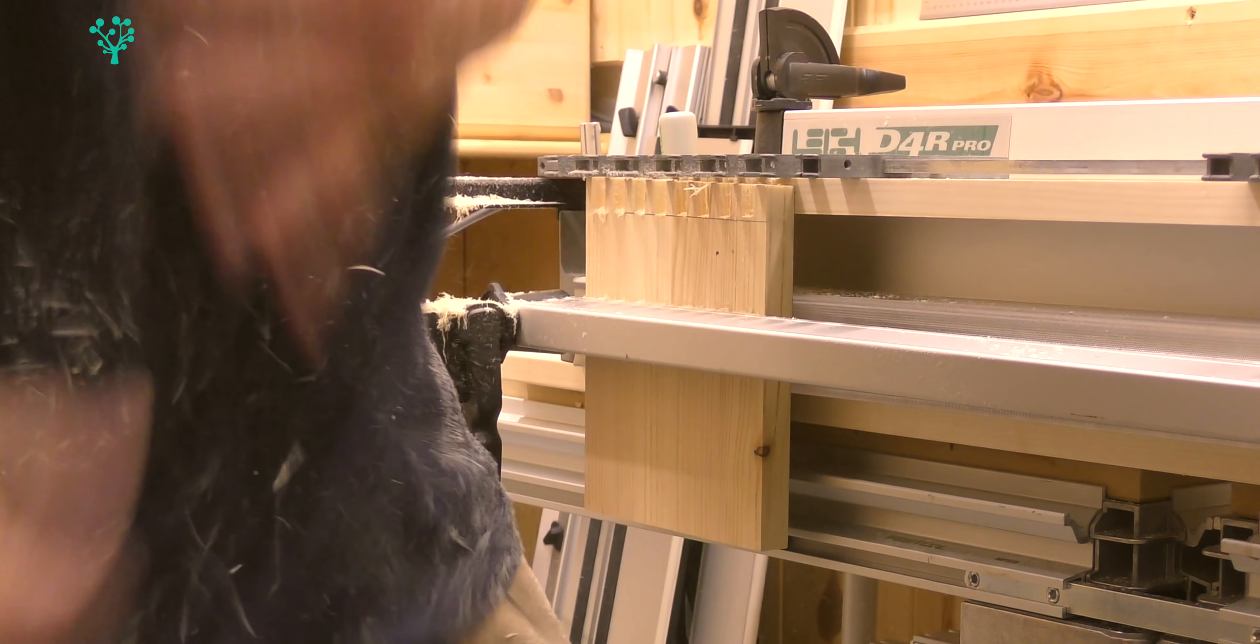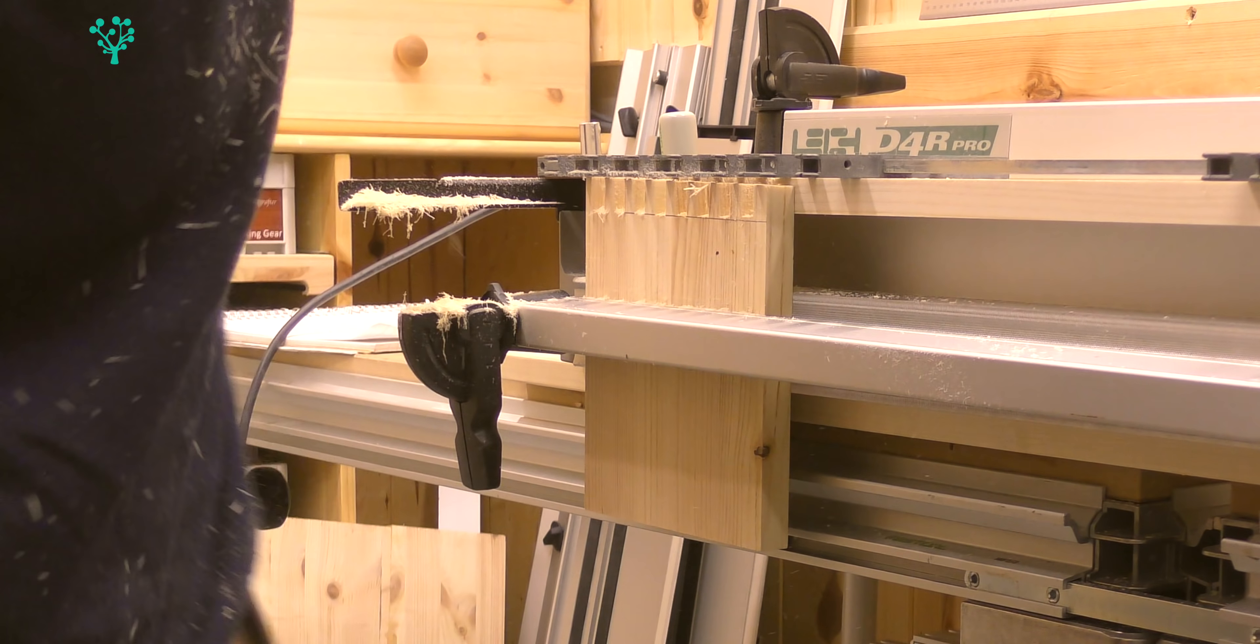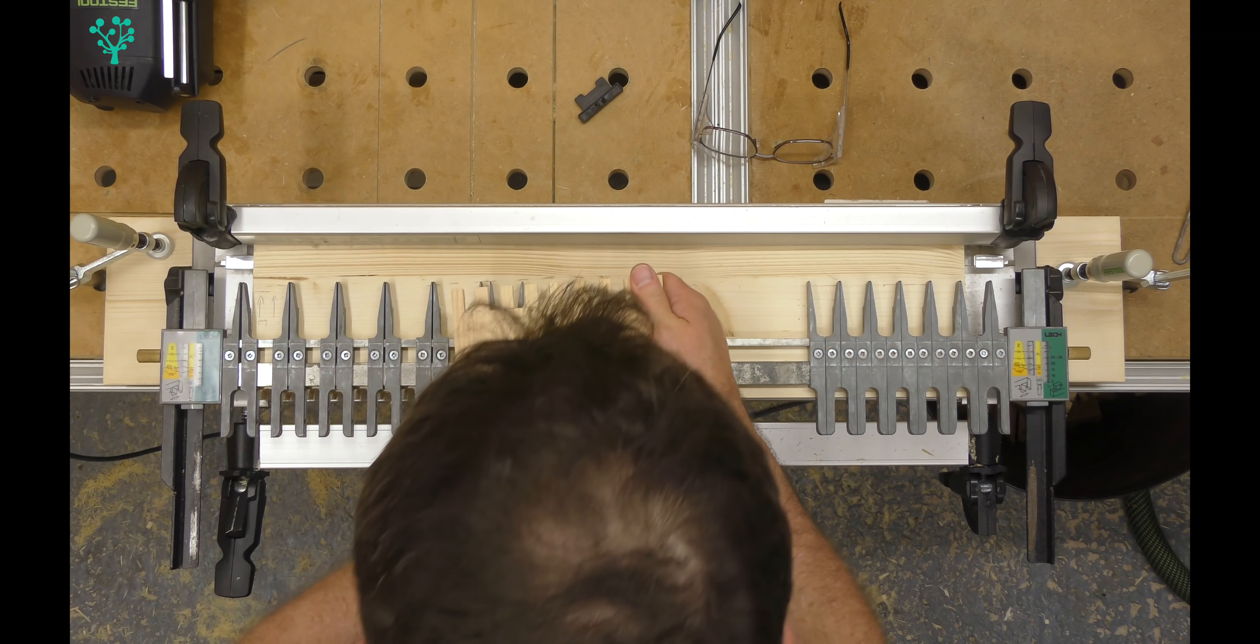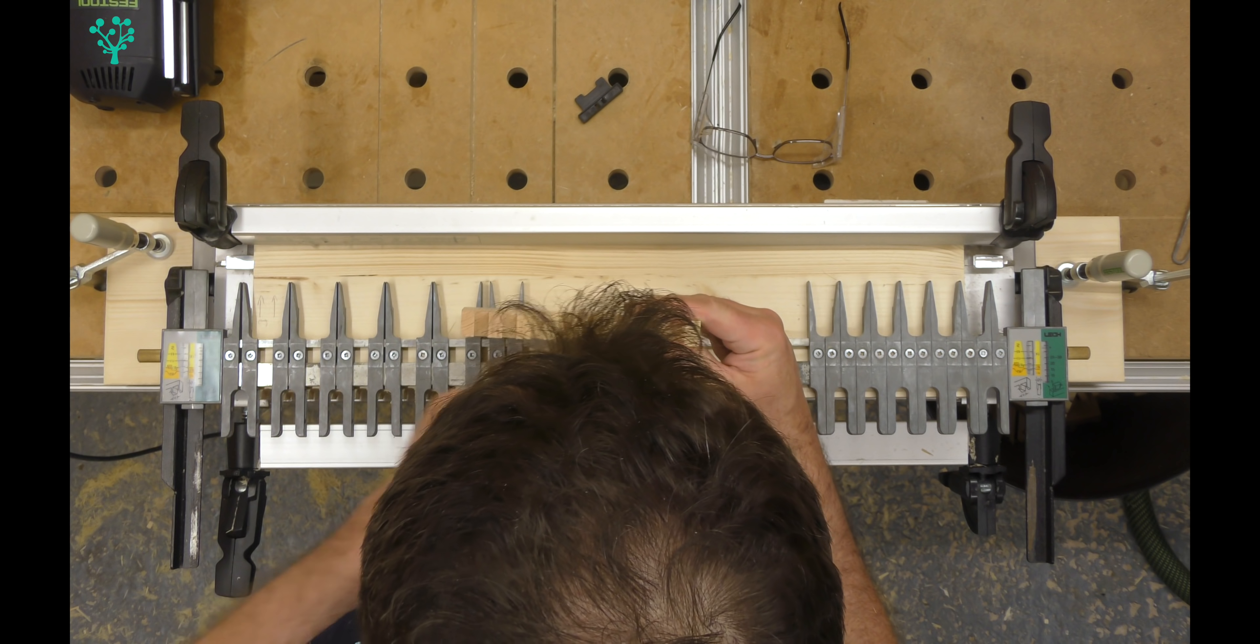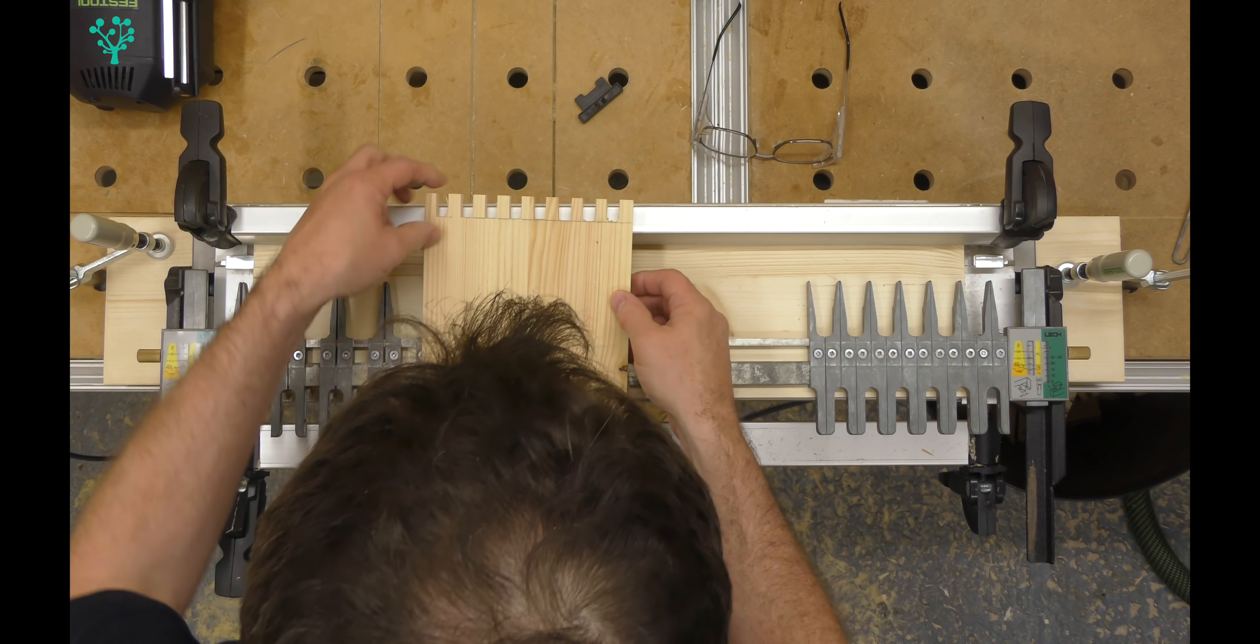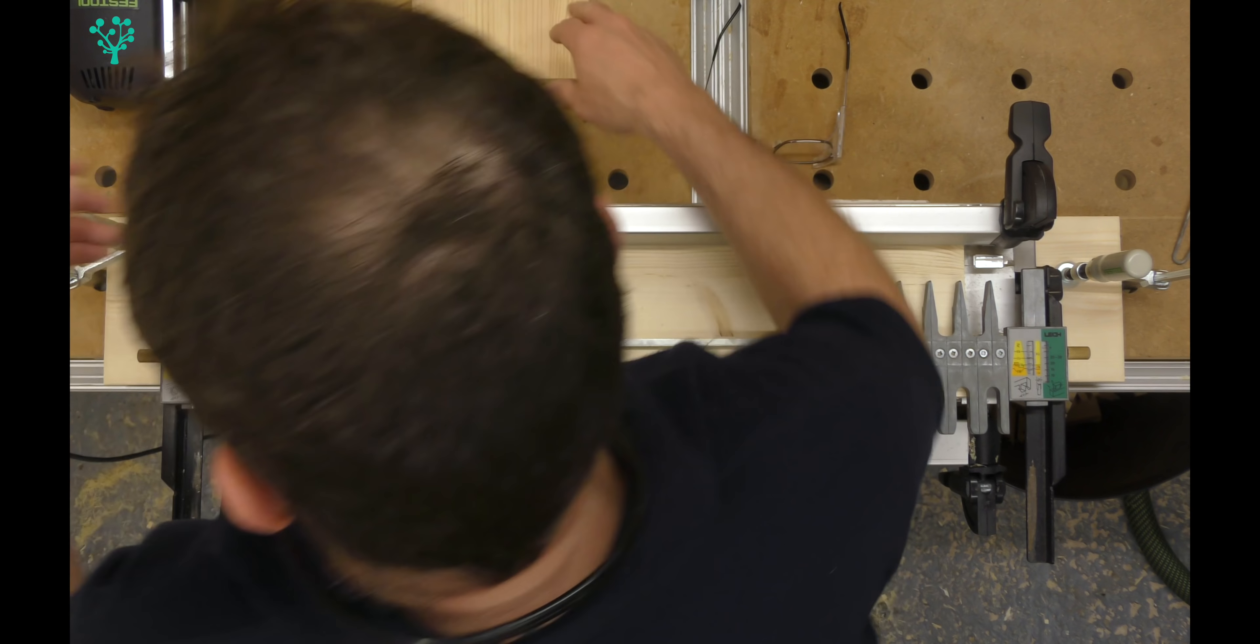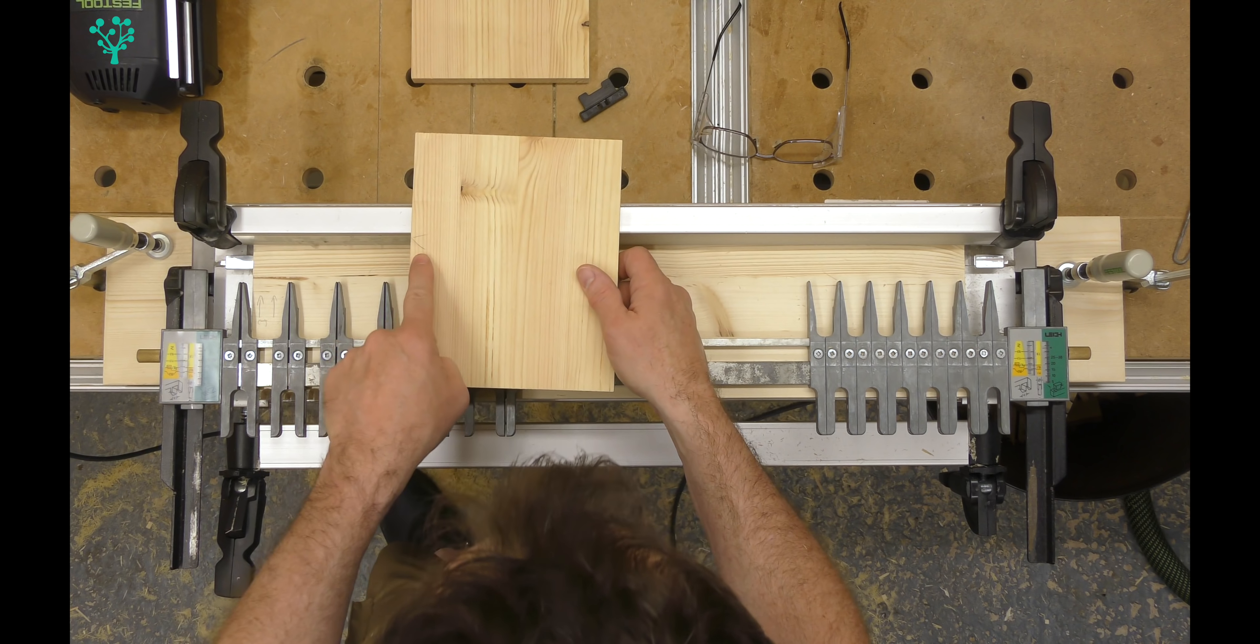So the next job is we now need to route the sockets. Again, my reference edge is going to go to the side, but this time I'm going to use this black adapter to offset it.